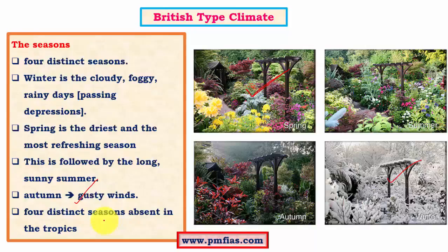These four distinct seasons are absent in tropical regions. In the rainforest there is only one season — the rainy season. In the savannah (tropical wet and dry) type of climate, there are only two seasons: dry summer and wet winter. In tropical monsoon climate there are three seasons: dry winter, dry summer, and a distinct rainy season. In contrast, temperate regions have four well-demarcated seasons.